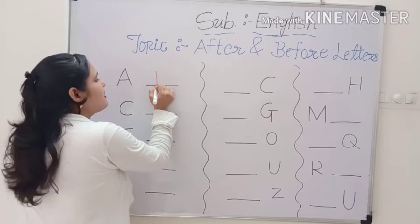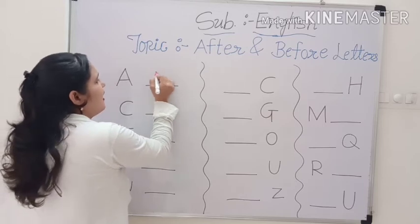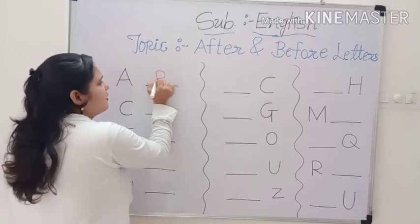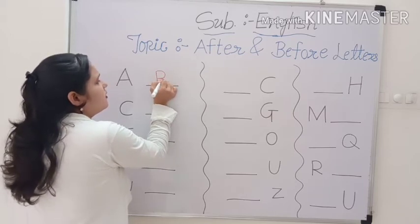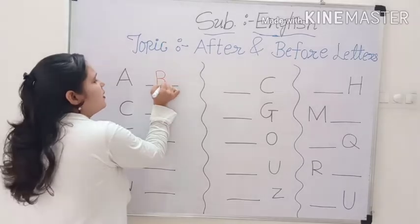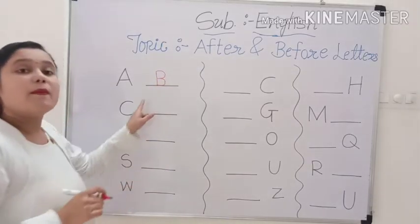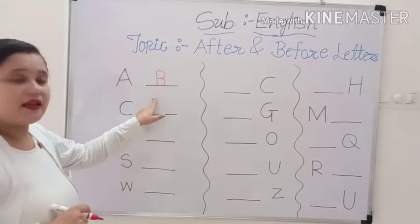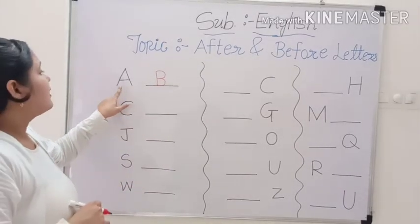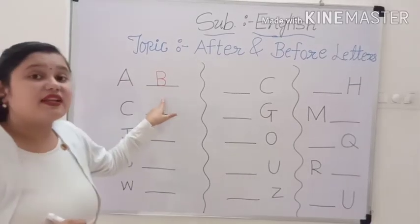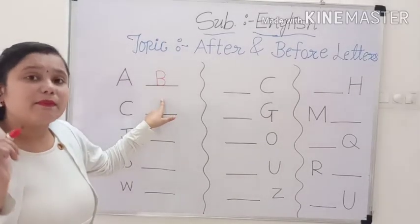First we make a standing line. After that make a curve. Then make another curve — B. Which letter comes after A? B. Very good.